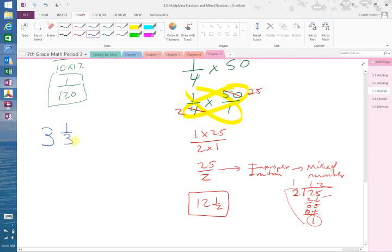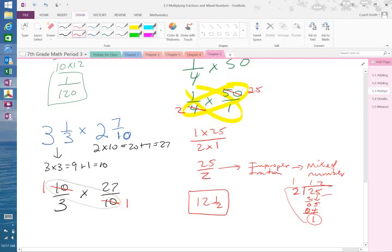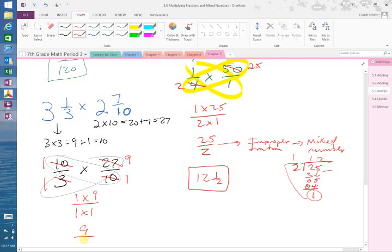So, I have 3 and 1 third times 2 and 7 over 10. Now they are both mixed numbers. So, I have to do this one. 3 times 3 which is equal to 9 plus 1 which is equal to 10. So, that is 10 over 3. This one is 2 times 10 is equal to 20 plus 7 which would be 27. So, that is 27 over 10. As I look at those two numbers, what is the common factor between 10 and 10? 10, obviously. 10 goes into 10 once. What is the common factor between 3 and 27? 3. 3 into 27 goes 9 times. 3 into 3 goes once. So, I have 1 times 9 on top. 1 times 1 on bottom. It gives me 9 over 1 which is 9.